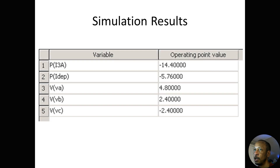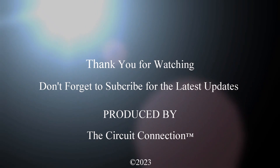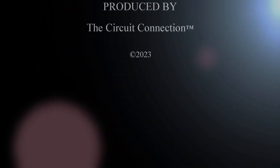For the simulation results: the power of the independent current source is negative 14.4 watts, the power of the dependent current source is negative 5.76 watts, VA is 4.8, VB is 2.4, and VC is negative 2.4. All of that checks out, and that's everything for this circuit problem. Thank you for watching — hopefully it was helpful, and have a nice day.